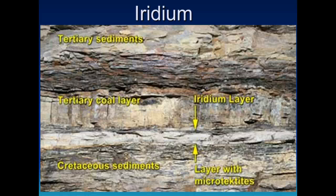Let's pick up where we left off talking about the evidence that may lead us to the understanding of what happened to the dinosaurs and why. At the end of the last podcast, we listed four pieces of evidence to look at more closely. The first thing discovered was an element in the K-T boundary layer called iridium, which is only found in a few places — mainly asteroids and comets — which would be evidence of some kind of impact.